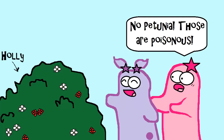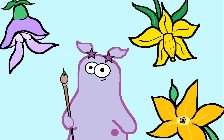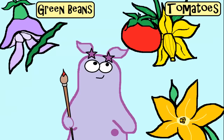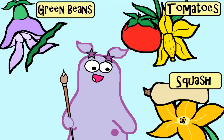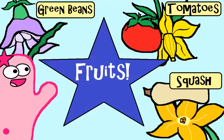By the biological definition, a fruit develops from the ovary of a plant—which doesn't exactly sound appetizing. Pumpkins, green beans, tomatoes, squash—these all developed from the ovary of a flowering plant. These are all fruits.